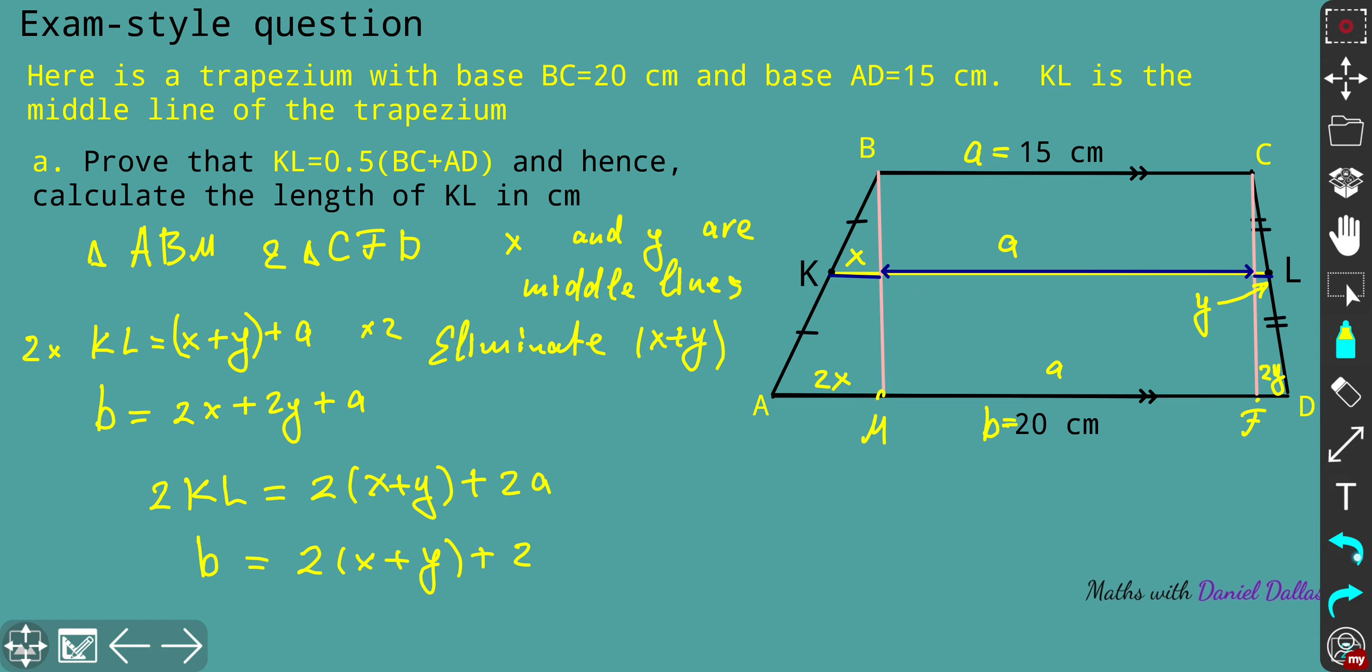What I'm going to do is express 2(x+y) from the bottom equation. So 2(x+y) is going to be equal to b minus a. Let's plug it in there. 2KL is going to be equal to b minus a plus 2a. Our target is to express KL through BC and AD, so let's do that. The right side will represent b plus a or a plus b, and we divide everything by 2.